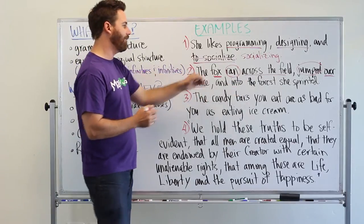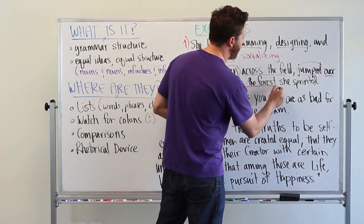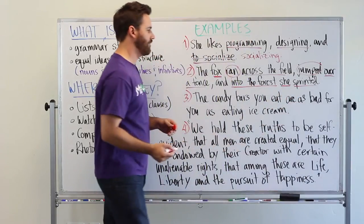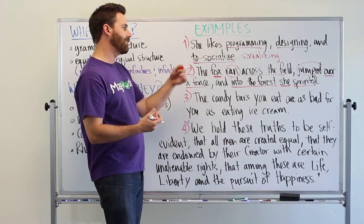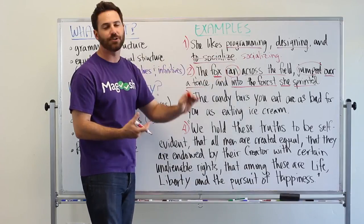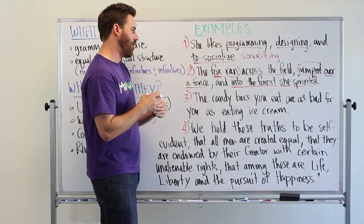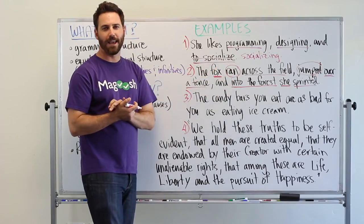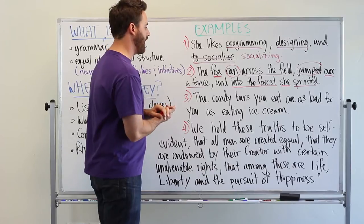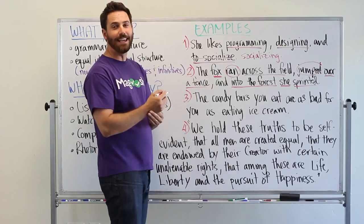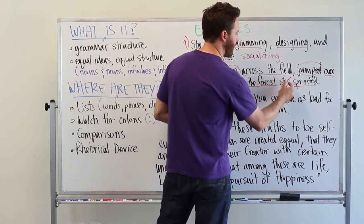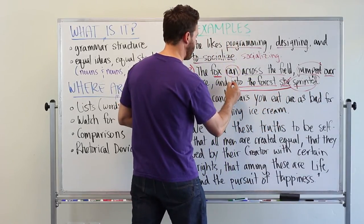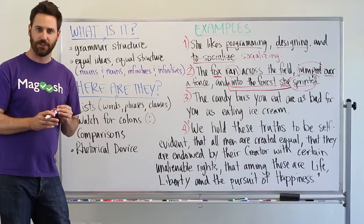Then when we get to the last item in our list, we have the prepositional phrase, and then a noun and a verb. So that's breaking the structure that was set up in these first two items of the list. And so what we want to do is adjust this so that it matches what came before. So we'd say, and sprinted into the forest. So you could really just eliminate this, take sprinted, and insert it right there. And sprinted into the forest.